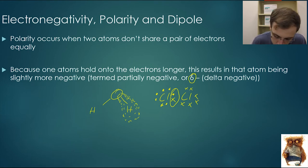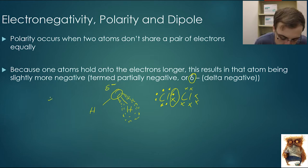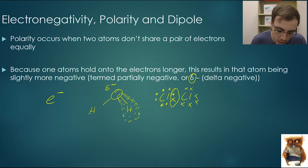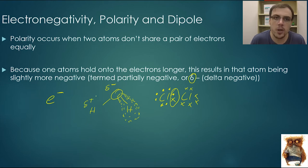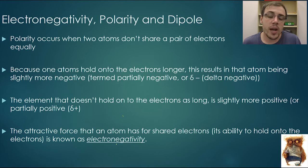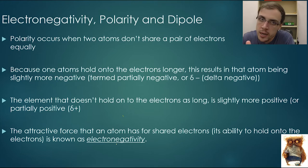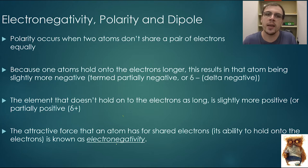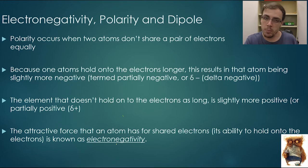We would denote oxygen as delta negative, because remembering that electrons are negative in charge, and these hydrogens would be delta positive, because they're not getting those electrons as much as they should. This attractive force — an atom's tendency to hold on to that electron a little bit longer then pass it on — is denoted as electronegativity. As you move from left to right on the periodic table and bottom to top, the electronegativity will increase.